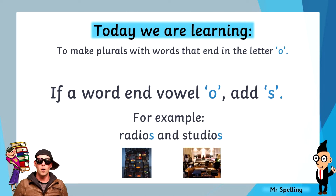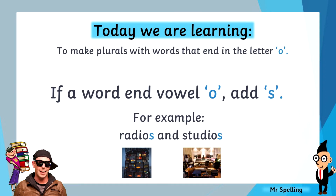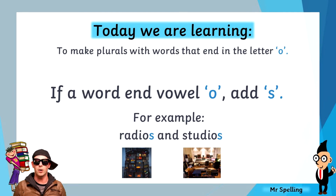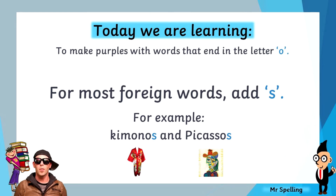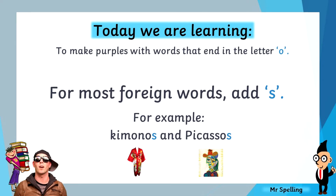The first guideline you need to know is: if a word ends vowel O, add S — just like in the words radios and studios. The next guideline is for most foreign words, just add an S. For example, the word kimonos, which comes from Japan, just add an S. And Picasso's — more than one of Picasso's paintings — it's a foreign name, so we just add S.